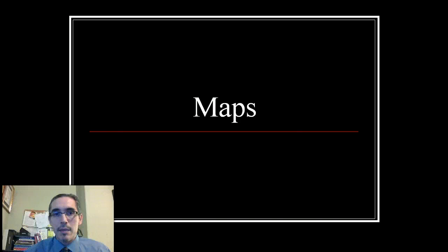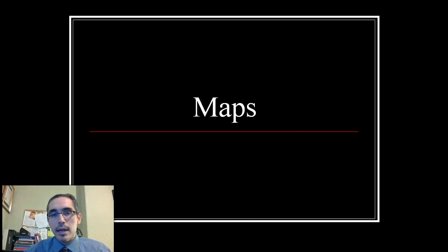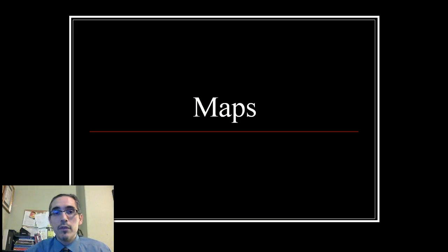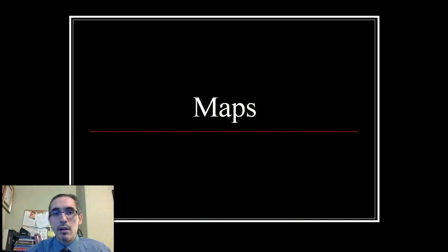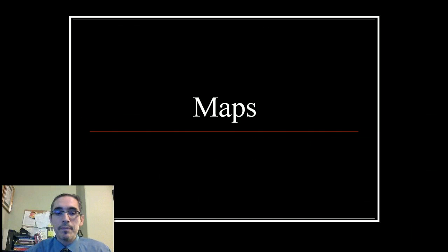This week we're talking about maps. So what is a map? At its most basic level, a map is a bird's eye view of the Earth's surface, usually neatly drawn, telling us where things are, where places are, and how to get there.